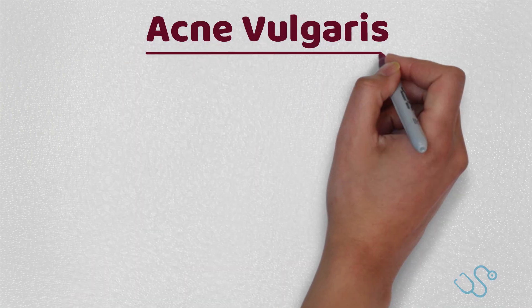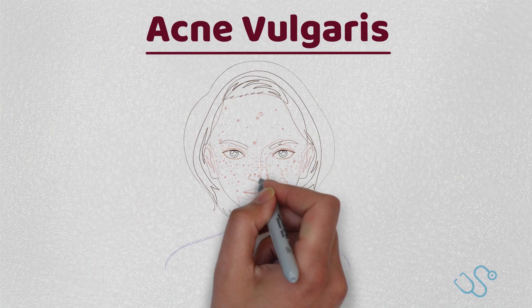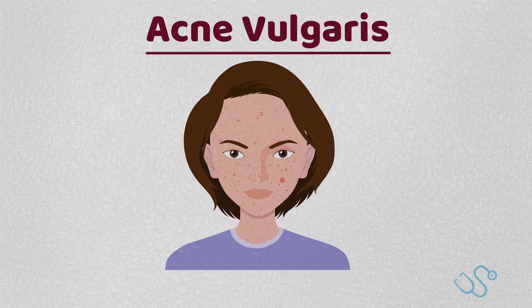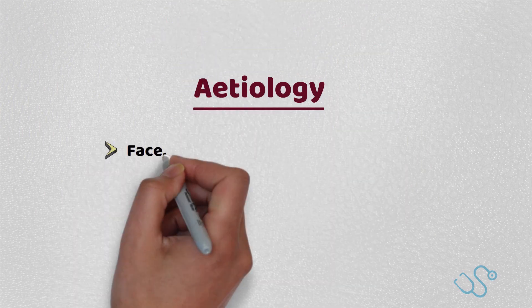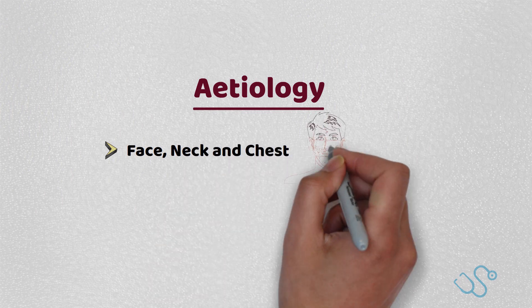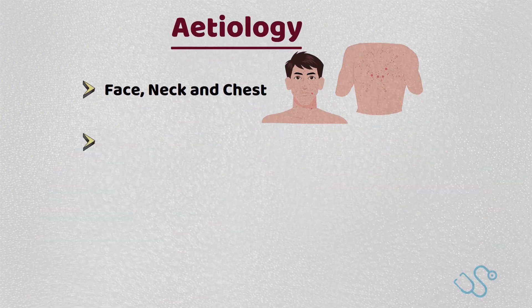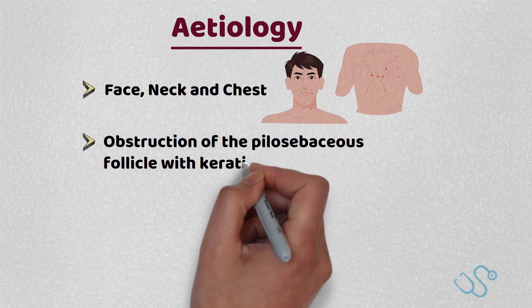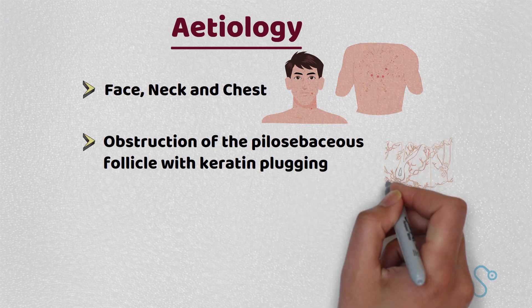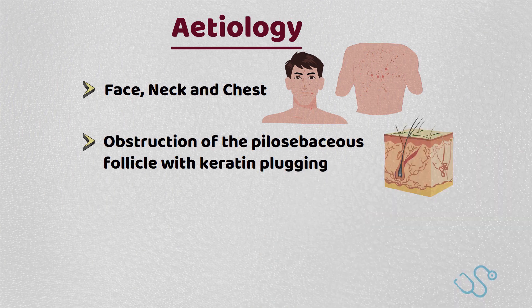Hi everyone and welcome back to the channel. This week we're going to cover acne vulgaris, one of the most common skin conditions in the western world. Classically it affects the face, neck and chest, and is typified by obstruction of the pilocebaceous follicle with keratin plugging. This then results in comedones, inflammation and pustules, but more on this later.